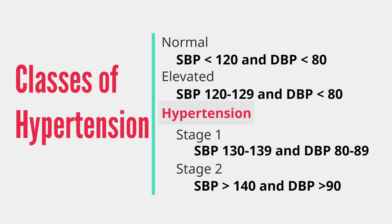The major change with these new guidelines is that stage 1 hypertension is set at a lower range. In fact, current stage 2 used to be stage 1 in prior guidelines known as the JNC 7. Another important point is that if someone has criteria that puts them in two different categories, they should be classified as the higher category.